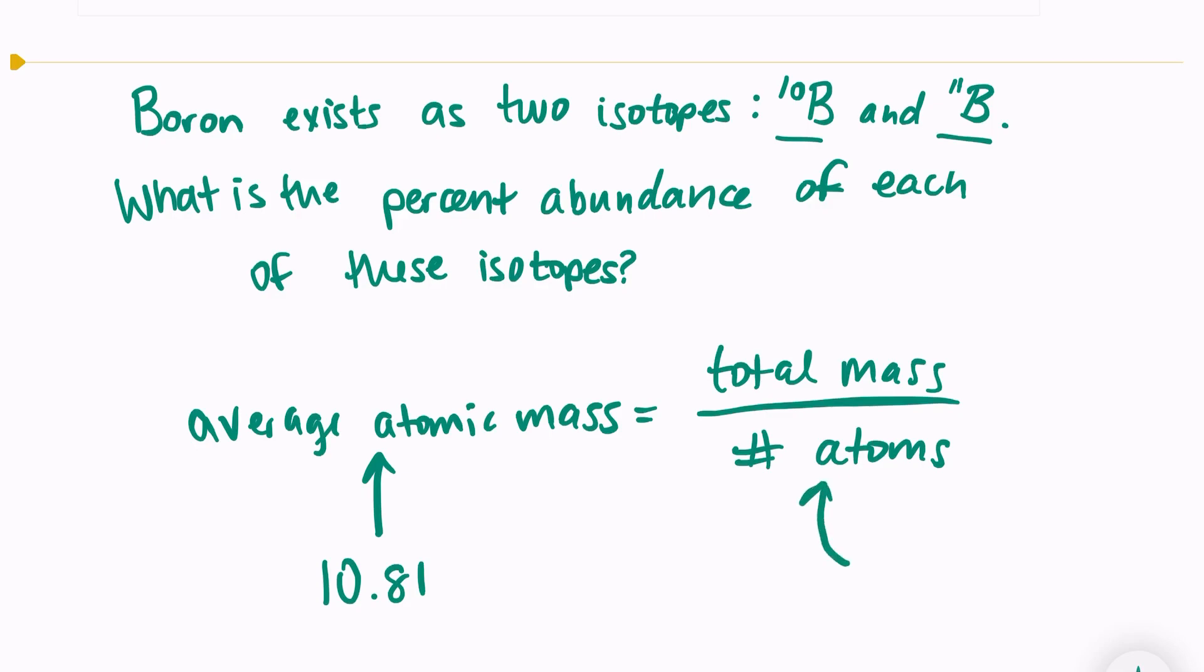The number of atoms in my sample is going to be 100 because I'm dealing with percentages. Dealing with percentages is easiest to assume that you have 100 atoms in your sample.